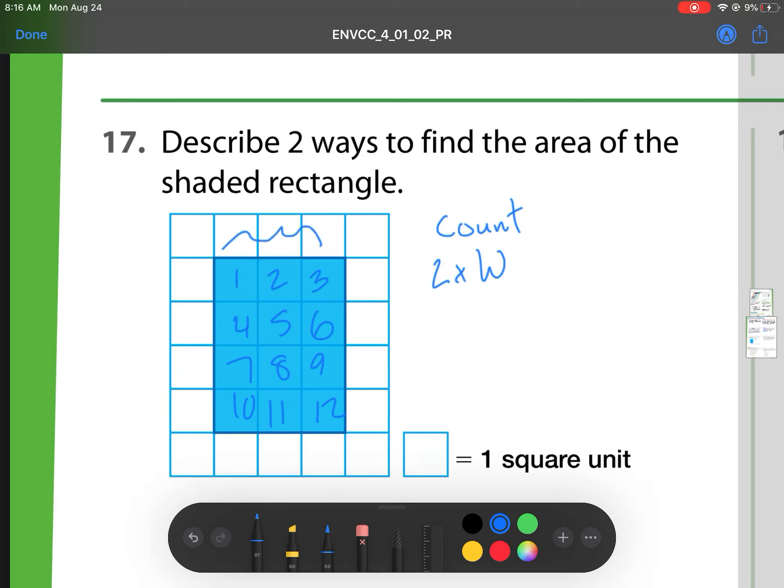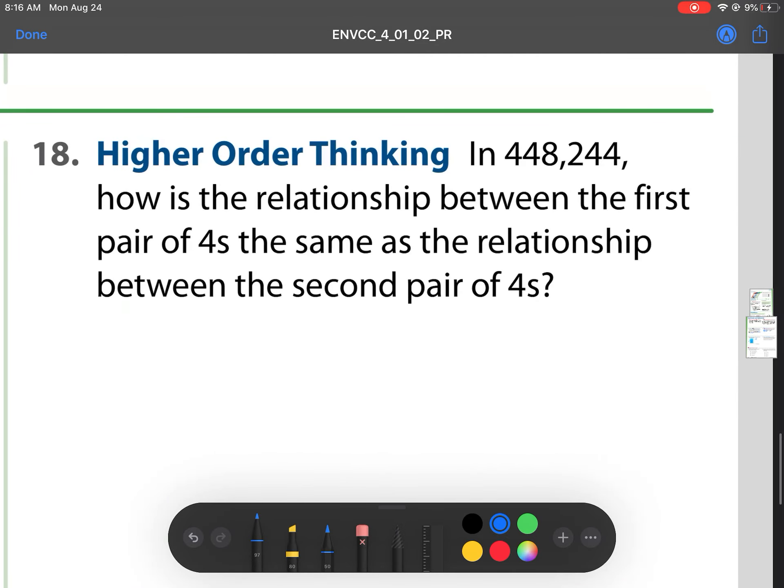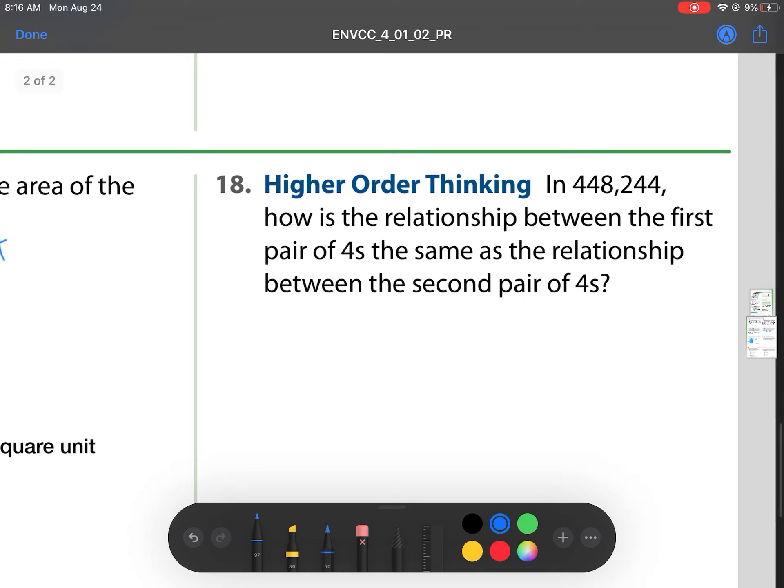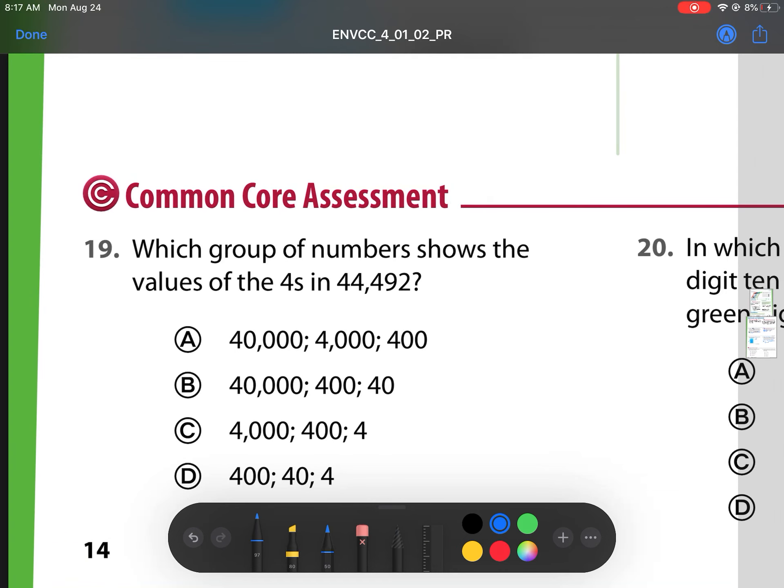Our other way is we can do length times width. So, that would be three times four, which also would give us 12. So, we have counting, and then we have length times width are those two ways. Our last one, number 18. In 448,244, how is the relationship between the first pair of fours the same as the relationship with the second pair? Well, how is this four related to that four? It's 10 times as great. And if we notice, this four is also 10 times as great. So, that's how they are the same. The other pair is also 10 times as great. So, they don't have the same value, but the relationship is the same because they're 10 times as great.